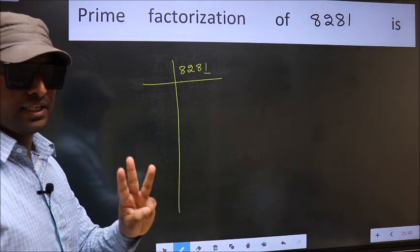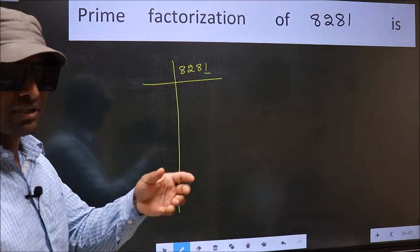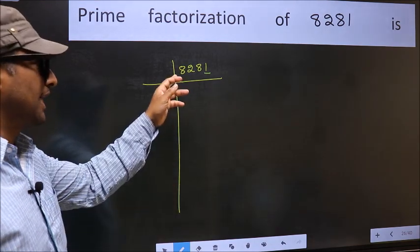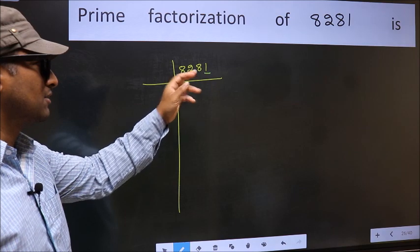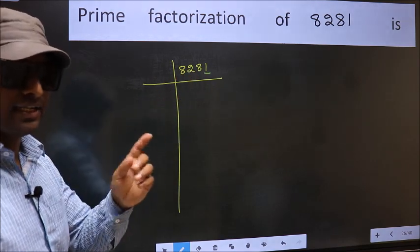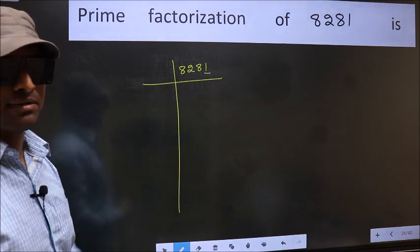Next prime number 3. To check divisibility by 3, we should add the digits. What I mean is 8 plus 2 plus 8 plus 1. We get 19 and 19 is not divisible by 3. So this number also not divisible by 3.